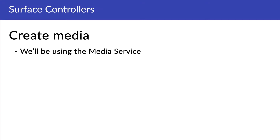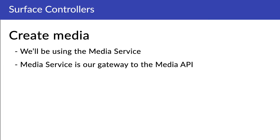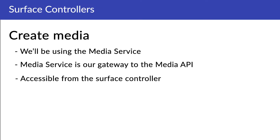Let's dive right into it. In order to create a new content node on our website, we had to use the content service. For creating and adding new media to our website, we'll be using another service — the media service. Just like the content service was our gateway to the content API, the media service is our gateway to the media API. And just like all the other services, the media service is accessible directly from the service controller on the services property.